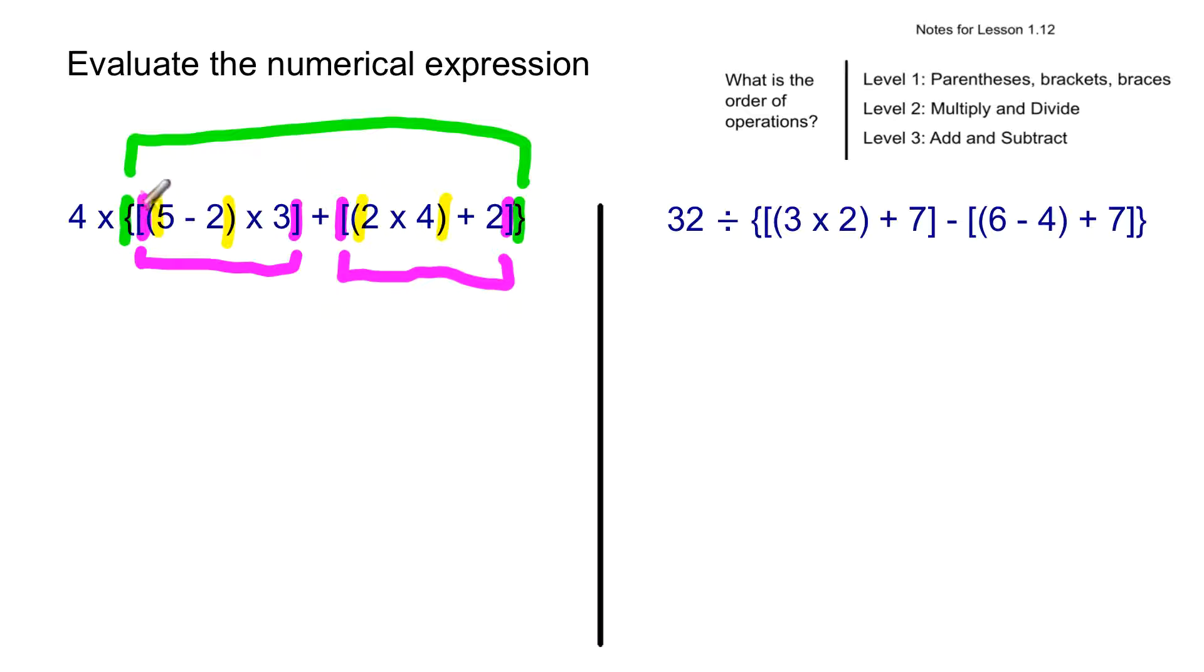So we're going to evaluate this whole pink group here. We'll add that to the other pink group here. We'll put those two together because all of that falls within the green group. And then we'll multiply all that times 4. So let's evaluate. Pink group first. Actually, yellow group first, but then within that, the pink group.